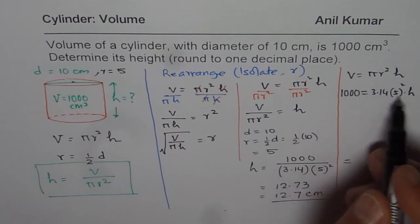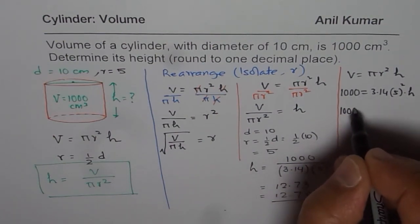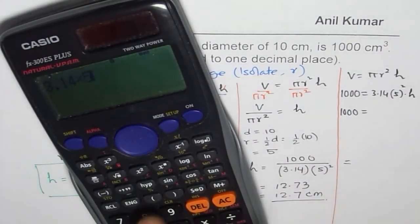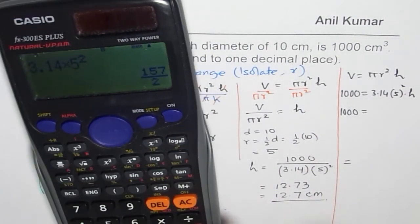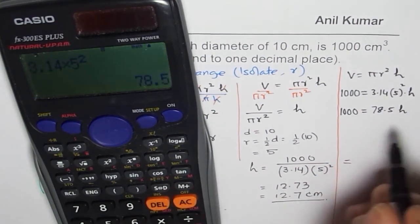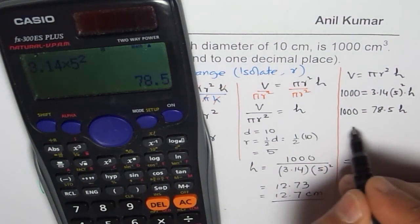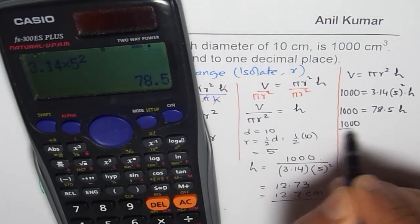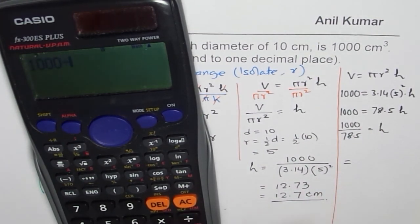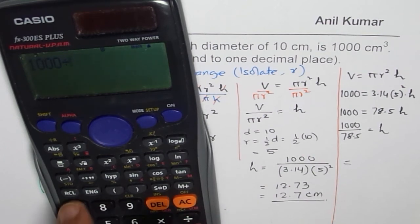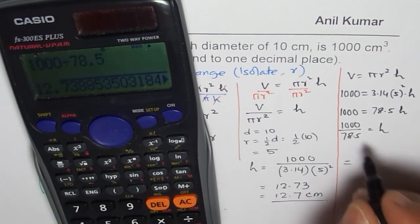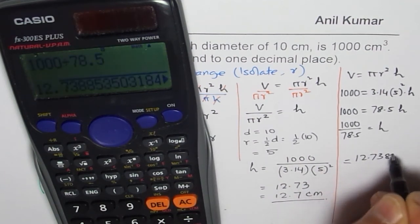Now what is h? Let us calculate this value. 1000 = 3.14 × 5², which equals 78.5 × h. Now h will be 1000 divided by 78.5. So we will divide 1000 by 78.5. That gives us in decimals 12.738.